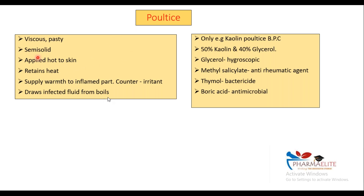You can remember: when it comes to kaolin poultice BPC, it consists of 50% kaolin and 40% glycerol. Don't forget this composition — 50% kaolin and 40% glycerol in your kaolin poultice BPC. Glycerol is hygroscopic as we are aware. Methyl salicylate is anti-rheumatic. Your thymol is bactericide and boric acid is antimicrobial. Don't forget all these different excipient properties. You can remember your kaolin poultice — it supplies heat and your glycerol is hygroscopic. No need to go into detail.